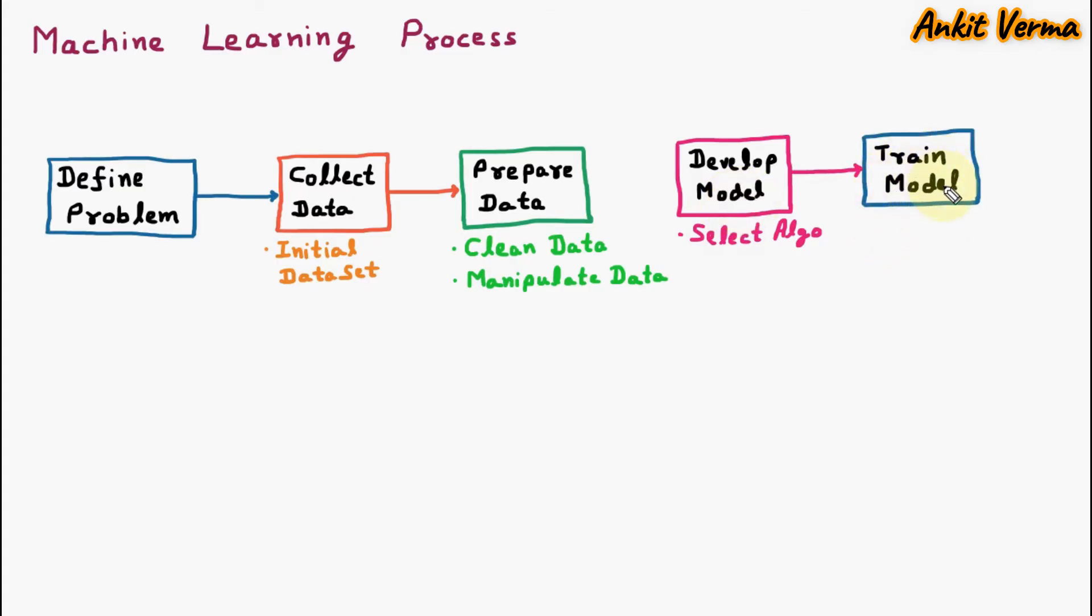Next thing is train model, means we are going to provide the training to the developed model. The data which we have prepared after cleaning and manipulation will be divided into two parts. The first part will be training data. This training data will be used to train the model. Training data is also called training set or training data set, and it is generally 80% of the prepared data.